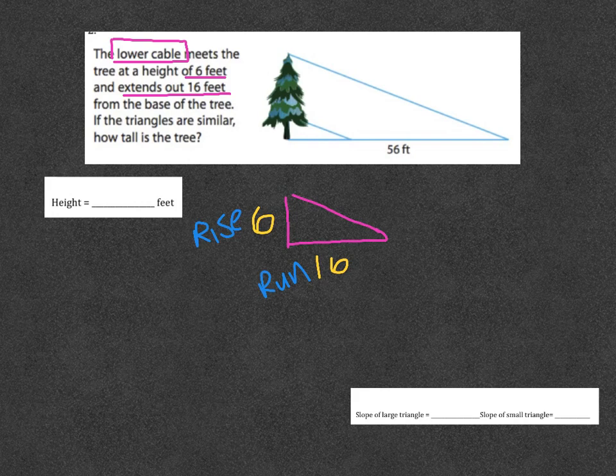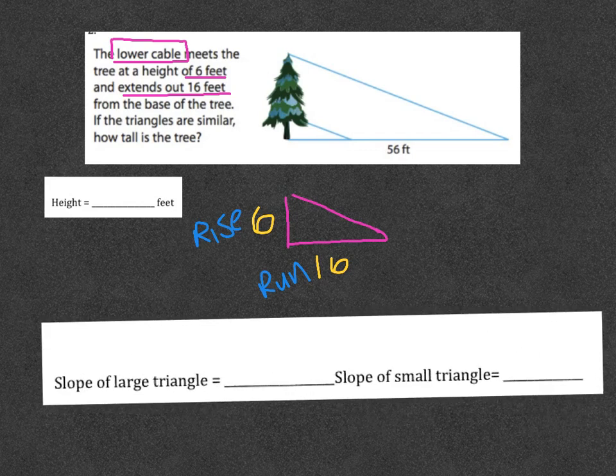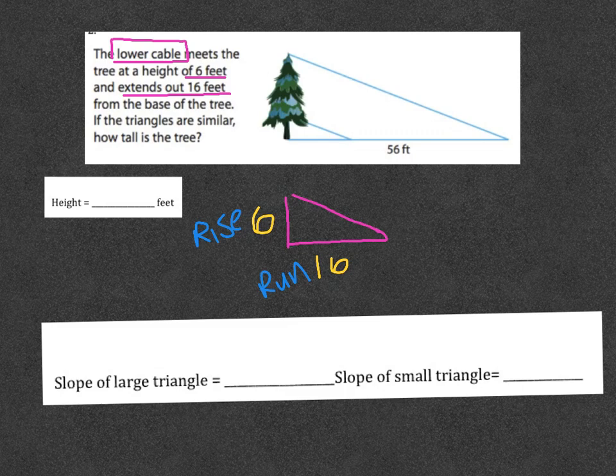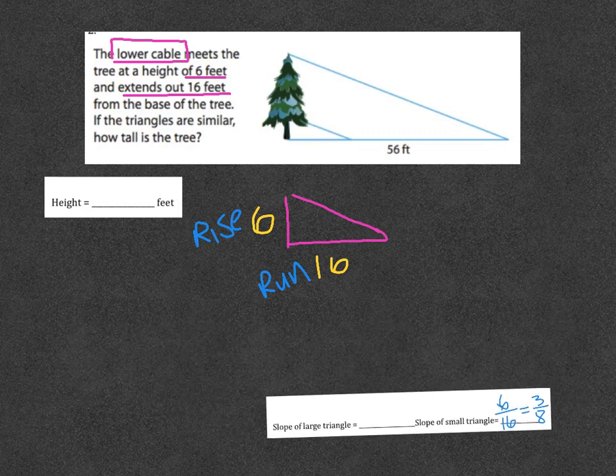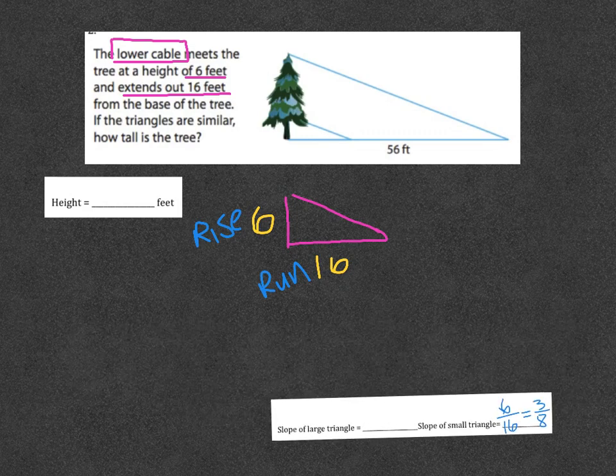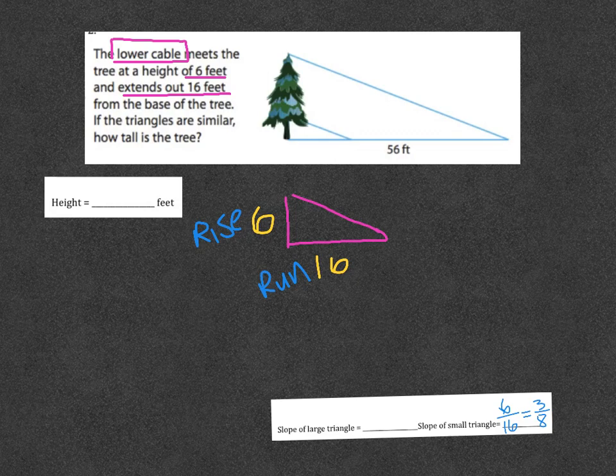Right now, the small triangle - I already know the slope of it because, again, this is the rise and this is the run. When we have triangles on a graph, the up and down is the rise and the sideways is the run. So people in my class filling out this homework sheet, the slope of the small triangle - right now I already know it - it is 6 over 16, or that can simplify to be 3/8. Let me get that out of the way now.